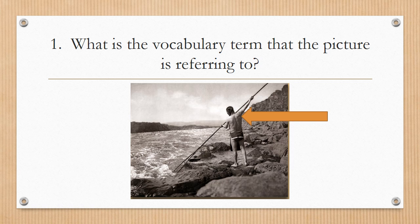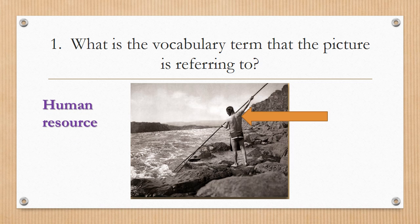Number one: What is the vocabulary term that the picture is referring to? Notice the arrow is pointing to the man who is spearfishing — this would be a Kwakiutl man catching his dinner. This would be a human resource because the human is doing the needed or necessary job. People are human resources.